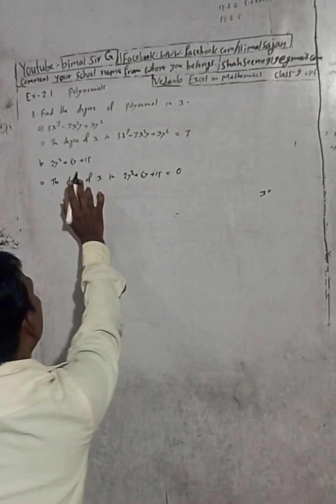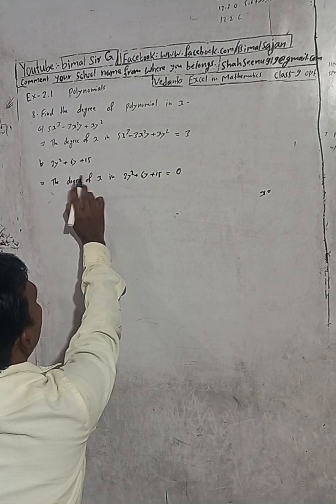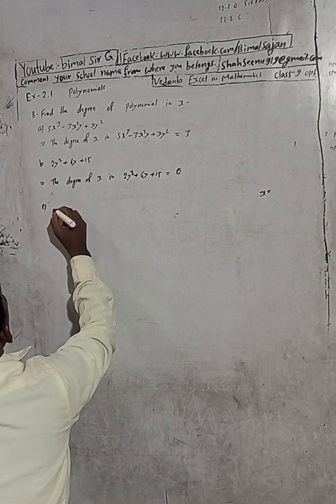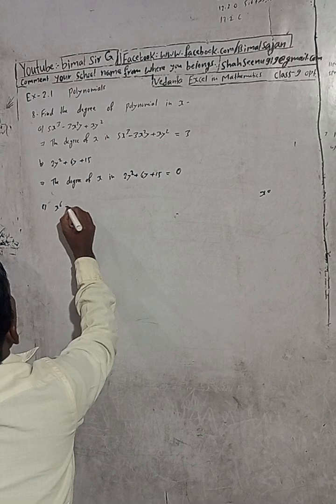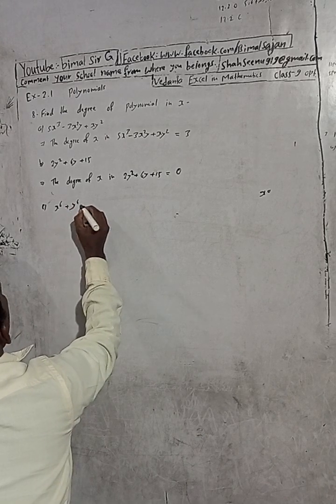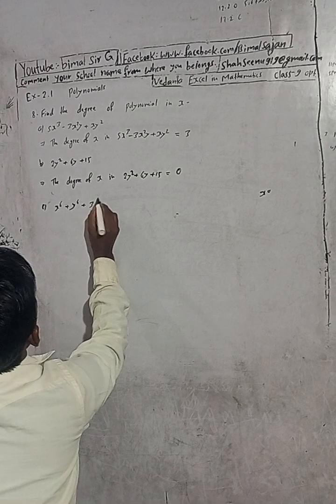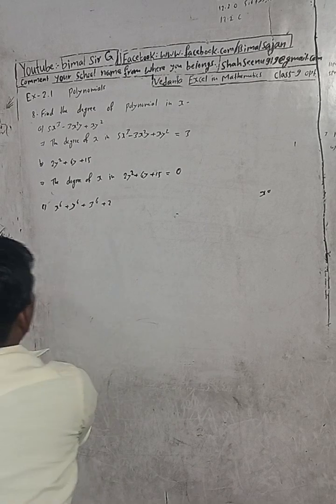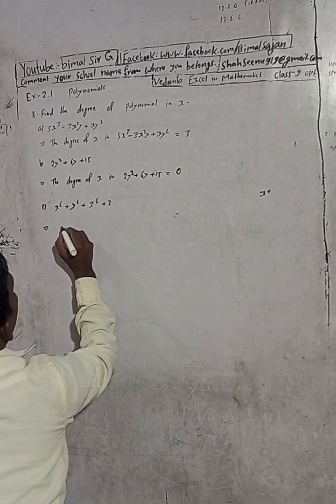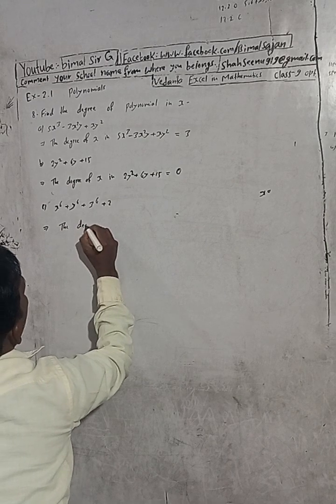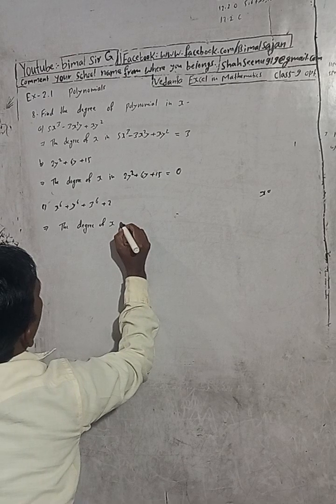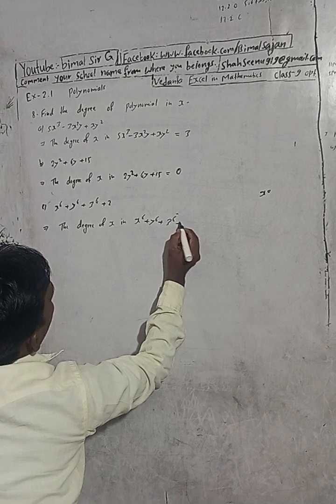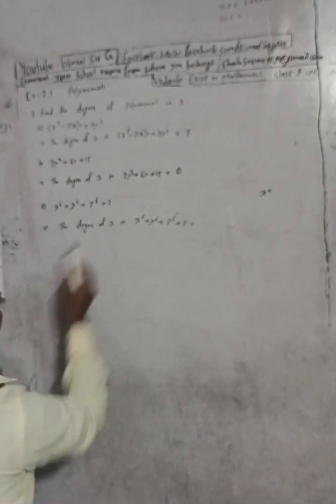Now see part c: x⁶ + y⁶ + 3⁶ + 2. In this polynomial, the degree of x in x⁶ + y⁶ + 3⁶ + 2 is equal to...